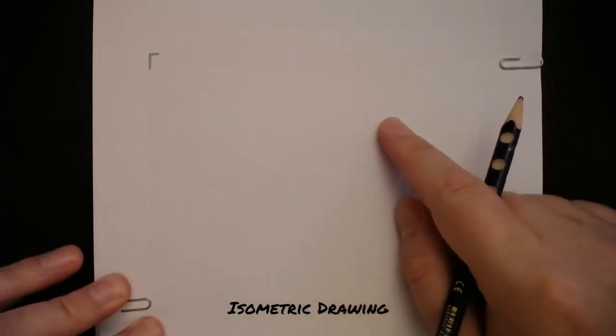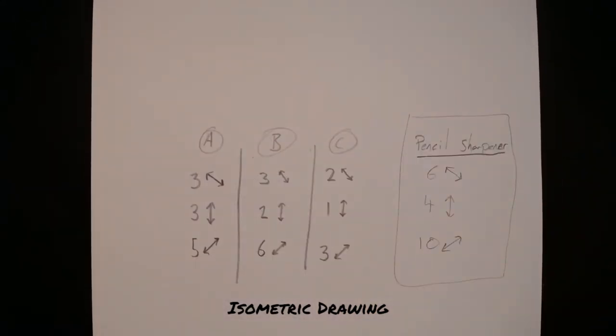Now to make this easier for you folks at home, I'm not going to draw in here because it's very hard for you to see with my camera where the isometric grid is. So I will draw on a new piece of isometric paper.